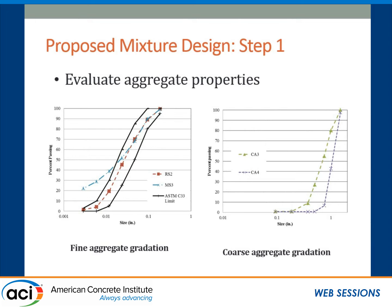In the right graph, two coarse aggregate gradations are shown. CA4, which is coarse aggregate 4, meets ASTM 467 gradation requirement. But CA3 does not meet ASTM gradation requirement — it meets one of the Texas DOT gradation requirements, which is Grade 3.